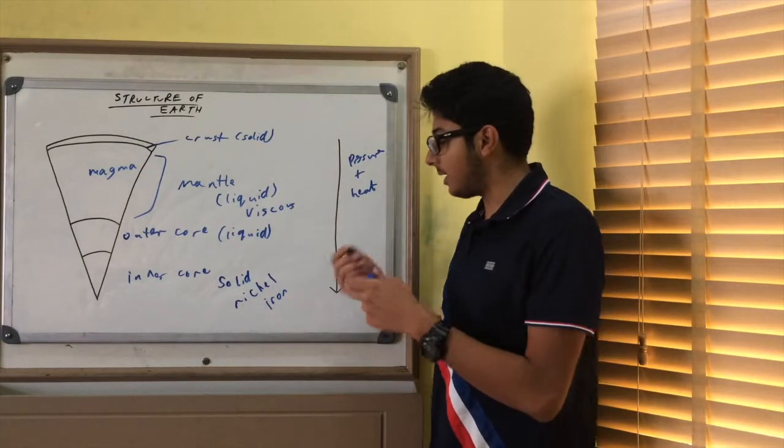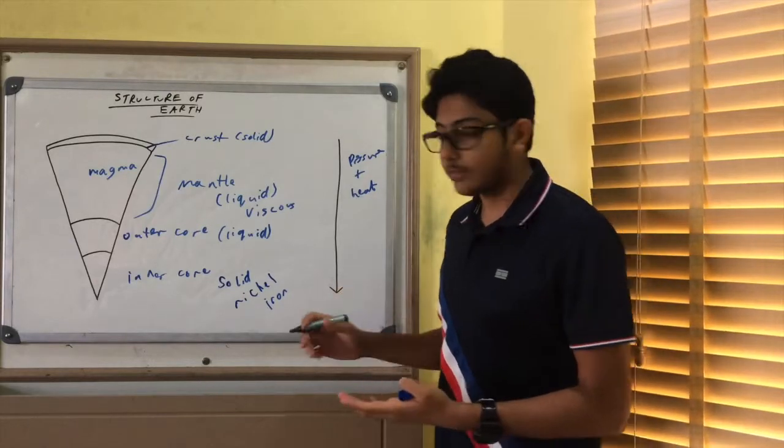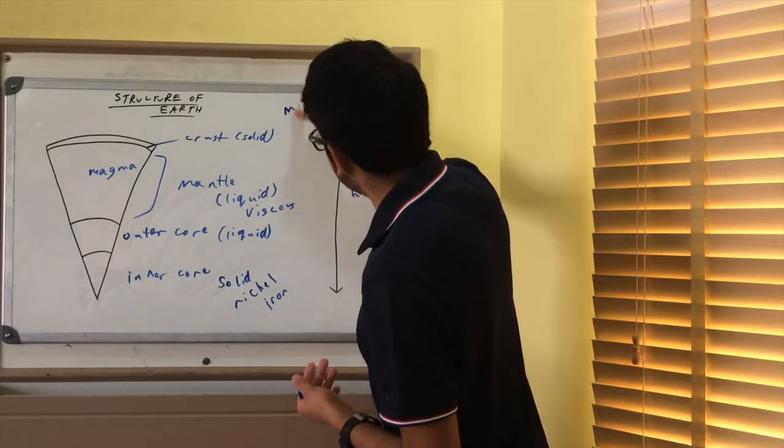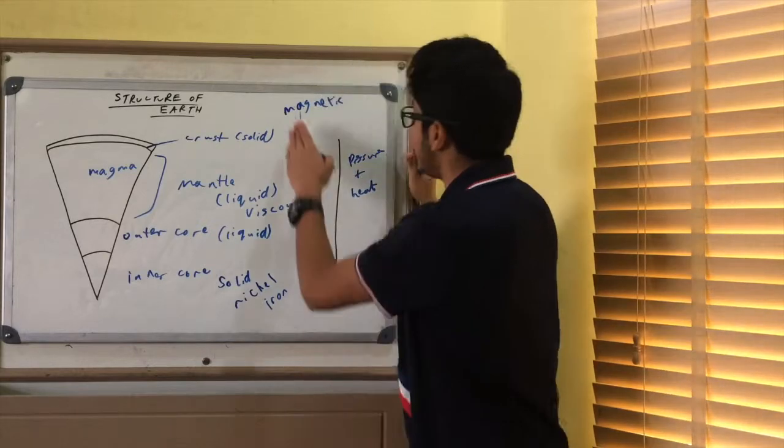How do we know that it's made out of nickel and iron? We haven't seen it before, it's too deep. Well, we know that our Earth has a magnetic field. And we believe that this comes from the magnetic iron in the crust, in the Earth.